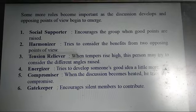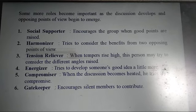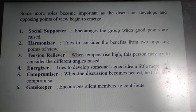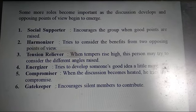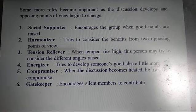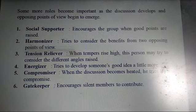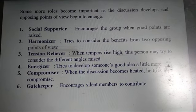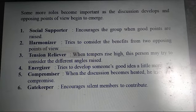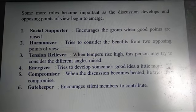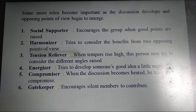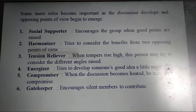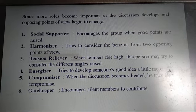Then, Harmonizer — tries to consider the benefits from two opposing points of view. Then, Tension Reliever — when tempers rise high in a GD, this person may try to consider the different angles raised. Then, Energizer — tries to develop someone's good idea a little more. Then, Compromiser — when the discussion becomes too heated, he tries to compromise from both sides.